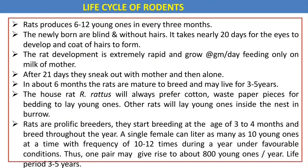Looking at the life cycle of rodents, rats produce 6 to 12 young ones every 3 months. The newly born are blind and without ears. It takes nearly 20 days for eyes to develop and ears to form. Development is rapid, feeding only on mother's milk. After 21 days they venture out with the mother and then alone.